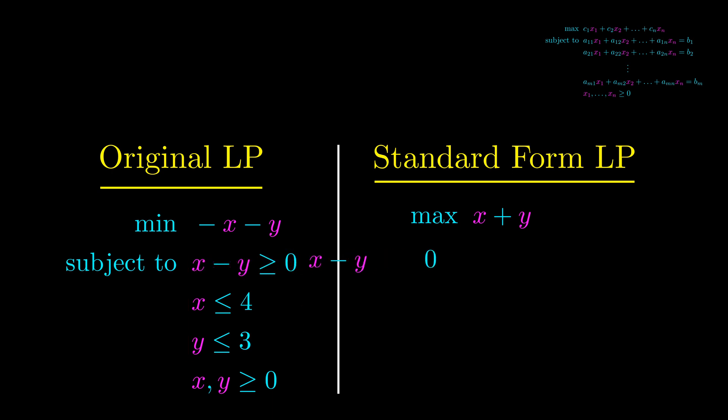The key is to introduce new variables. For the first constraint, we subtract the variable s1 and transform the inequality into an equality. The idea behind this is that if x minus y is greater than zero, then there is some surplus in the first constraint. After subtracting the surplus, we have an equality constraint. The surplus is always non-negative.